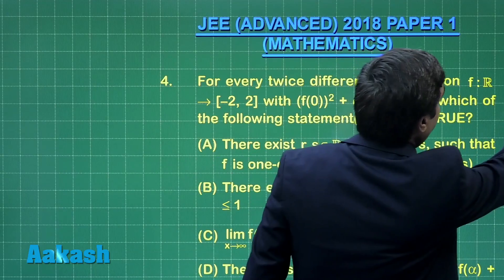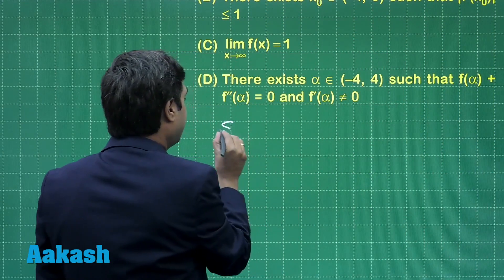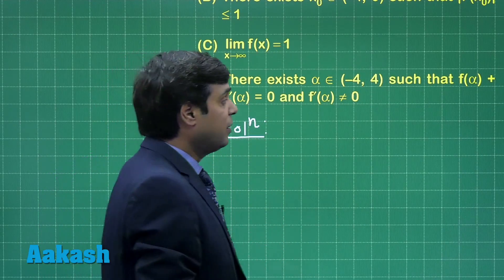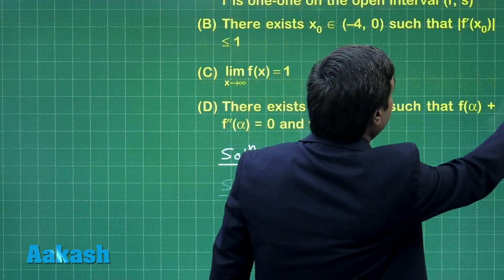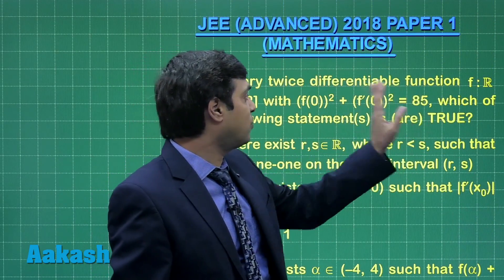Let us start this one. It is given to me in this question that f is a function satisfying one condition: f(0) whole square plus f'(0) whole square equals 85.